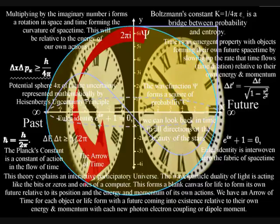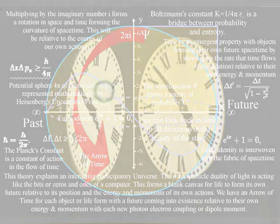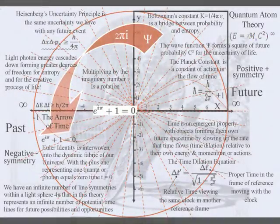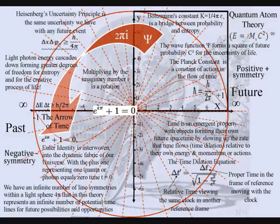Spherical geometry will naturally form three-dimensional space, and we have an infinite number of line symmetries within a sphere. In this theory, these line symmetries represent an infinite number of potential timelines for future possibilities and opportunities.